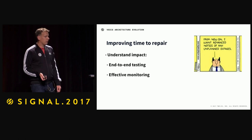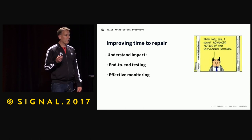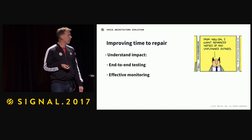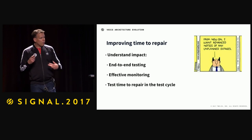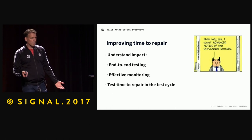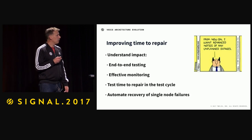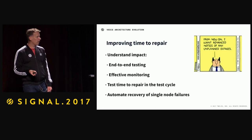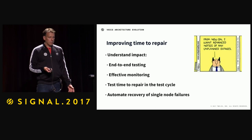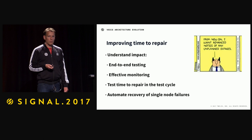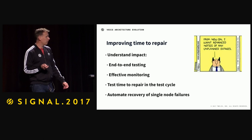Also, make sure you have effective monitoring — a single dashboard where you can quickly assess the health of the system, down to the service level. To improve time to repair, you can't improve what you can't measure. The best approach is to test time to repair in your test cycle — you'll quickly realize the ideal is automated recovery of single node failures. Thanks to the work of many people across the platform and data teams, we're now in a place where we have automatic recovery of single node failures.